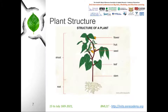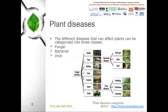Plants are living beings, the majority of which are attached to the earth by their roots. This characteristic makes the behavior of these plants strictly related to their environment. Plants are subjected to various diseases that can be grouped by regions. Moreover, as for humans, diseases that can affect plants distract and/or modify their vital functions. The different diseases that can affect plants can be categorized into three classes: fungal, bacterial, and viral.